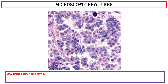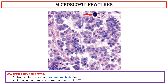This photo shows a low-grade serous carcinoma showing uniform nuclei and some psammoma bodies. Please note that prominent nucleoli are more common than in serous borderline tumors.